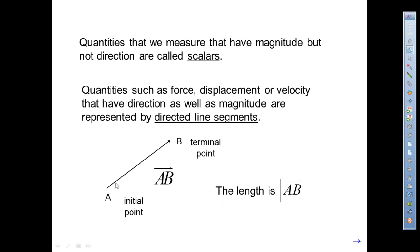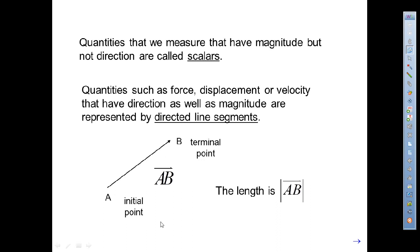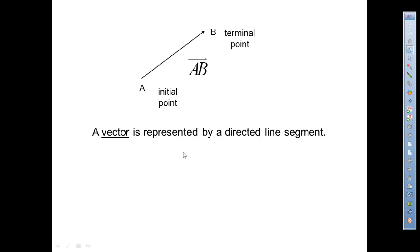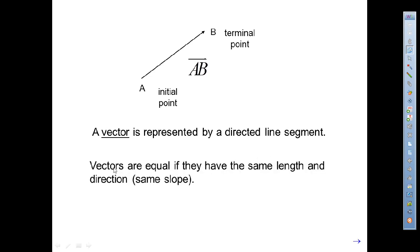The length of the directed line segment signifies the magnitude of that quantity. A vector is represented by that directed line segment. Vectors are equal if they have the same length and the same direction — in other words, the same slope. So any vector that has the same length as AB and goes in that exact same direction, with the same rise over run, those vectors will be called equal vectors.